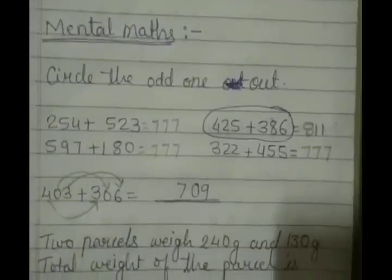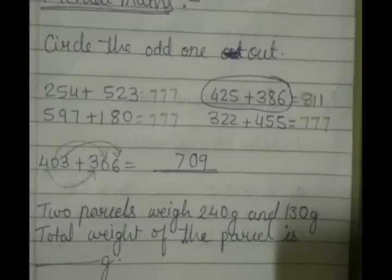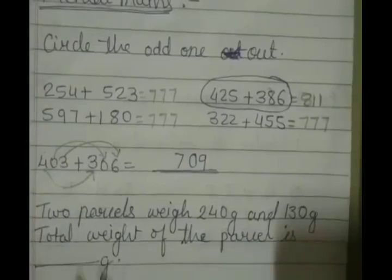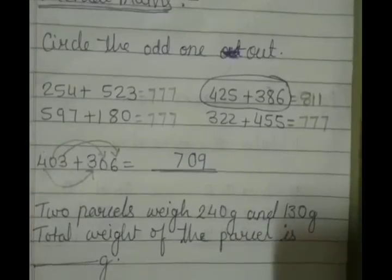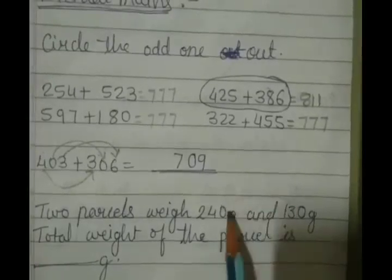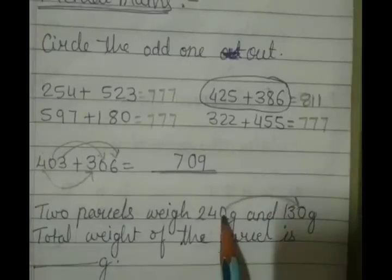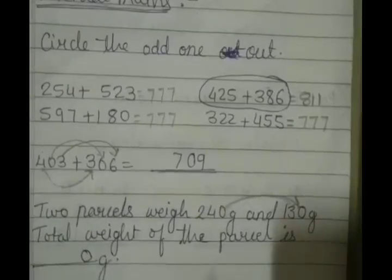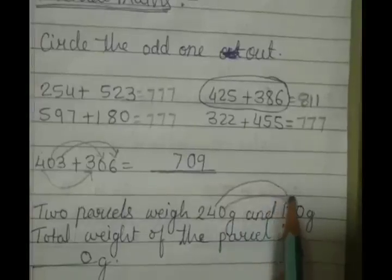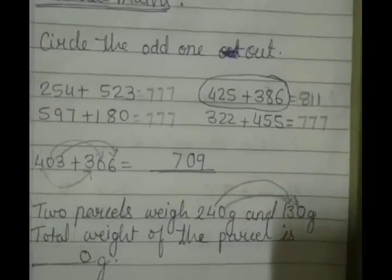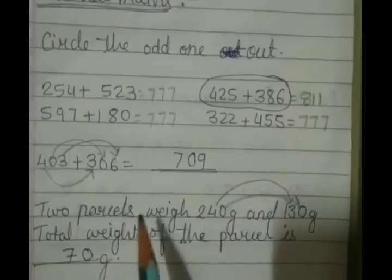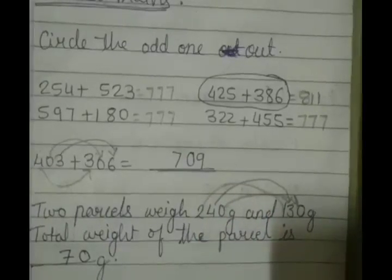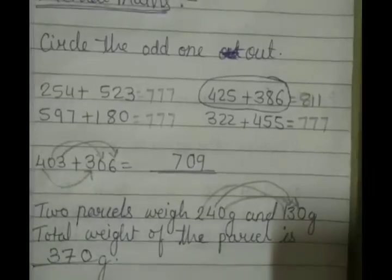Next is third one. Two parcels weigh 240 gram and 130 gram. Total weight of the parcel. Here also you can do this. 0 plus 0, just write down 0. Then 4 plus 3, we will get 7. And at the hundreds place, 1 plus 2, we will get 3. So total weight is 370 gram.